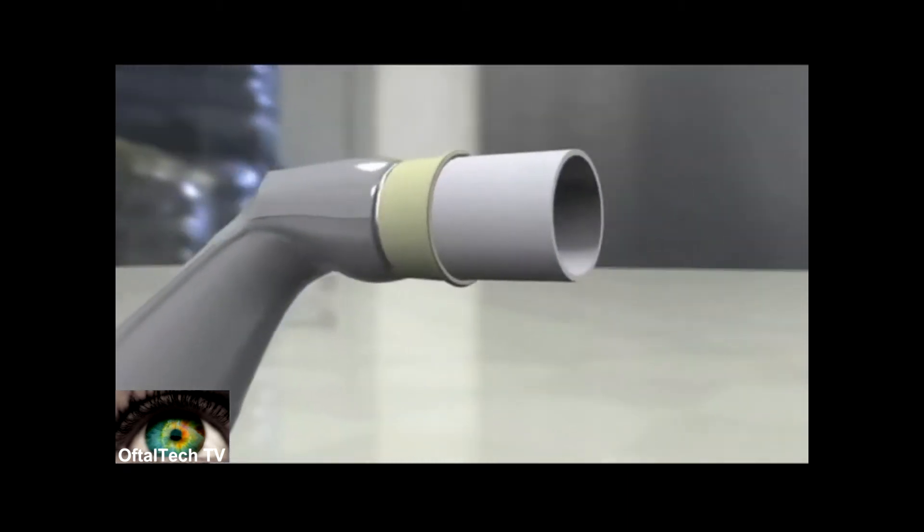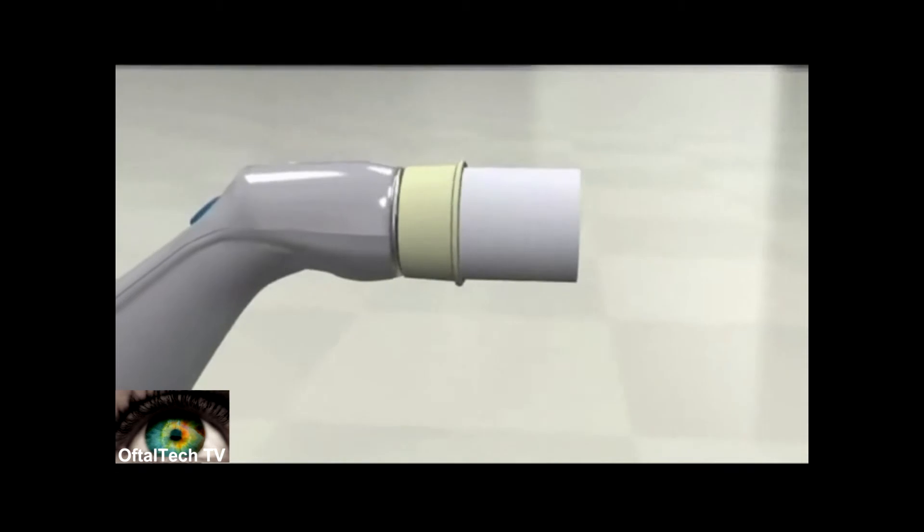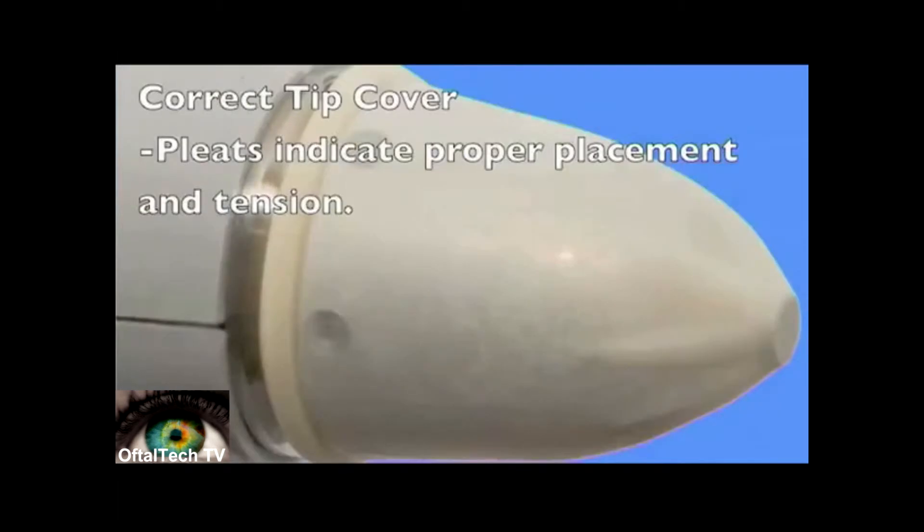Simply roll the cover on using the cardboard applicator. This photo is an example of a properly placed tip cover.